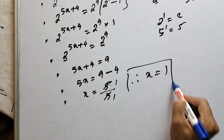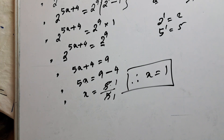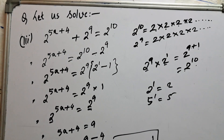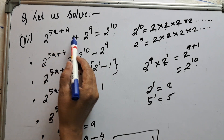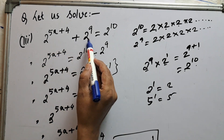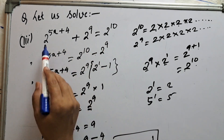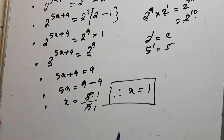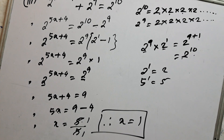So we were asked to find the value of x and we got x equals 1. The equation was 2 to the power 5x+4 plus 2 to the power 9 equals 2 to the power 10, and the value of x is 1. This was for today. I hope you understood the concept of the topic. Stay tuned, I will upload similar type of questions in the future. Thank you so much.